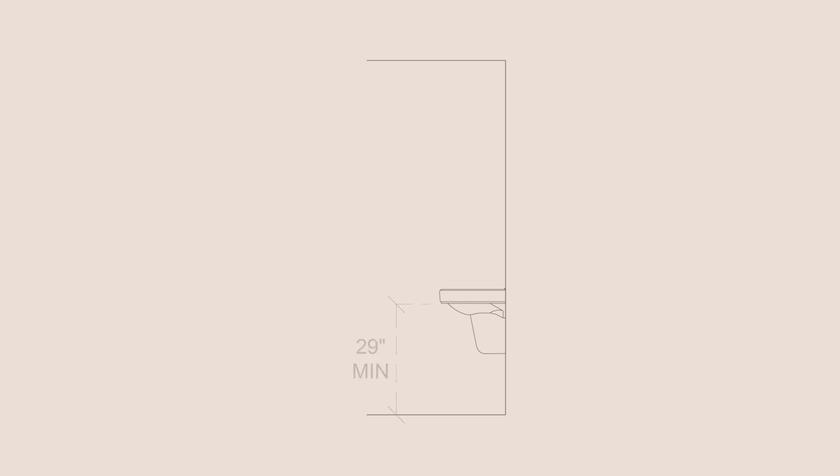Let's now take a look at the elevation for a standard ADA compliant lavatory or sink. Lavatories must be mounted no more than 34 inches above the finished floor, measured to the top of the lavatory fixture or to the top of the counter. They must also have a minimum knee clearance underneath the lavatory of 29 inches high and 8 inches deep. Because of all these conditions, wall-hung lavatories are always preferred in ADA restrooms — the same pertains if you see a question on the NCIDQ exam asking what type of lavatory fixture is best for ADA compliance.